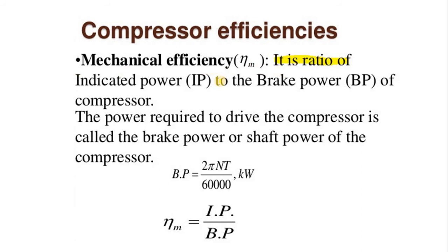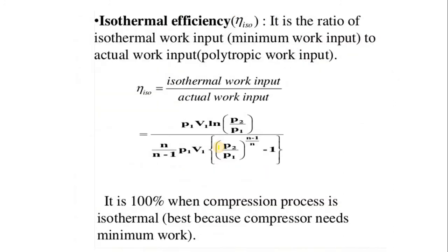Mechanical efficiency in a reciprocating air compressor applies to both single-acting and double-acting types. Mechanical efficiency is the ratio of indicated power (IP) to brake power (BP): η_mech = IP / BP. Brake power is calculated by a dynamometer using the formula 2πNT/60,000 in kilowatts, or 2πNT/60 in watts.